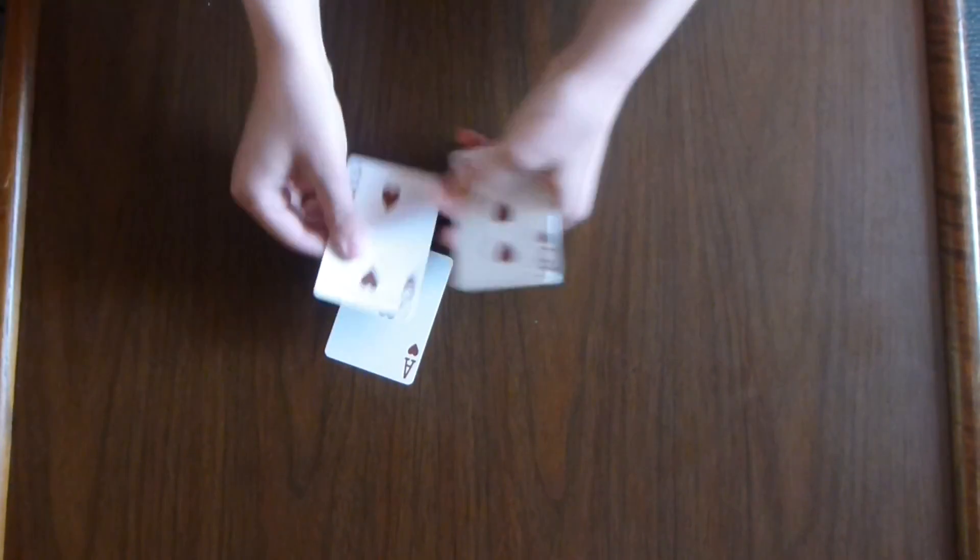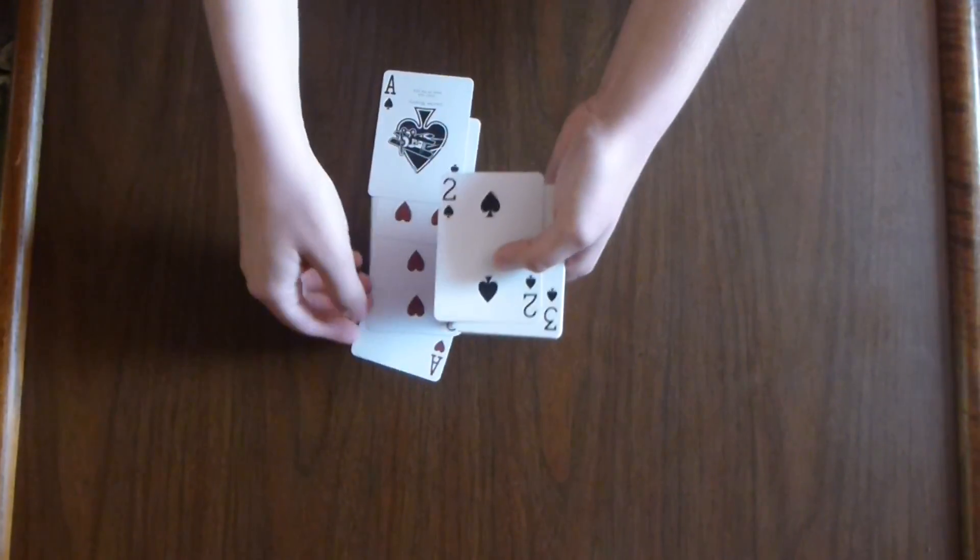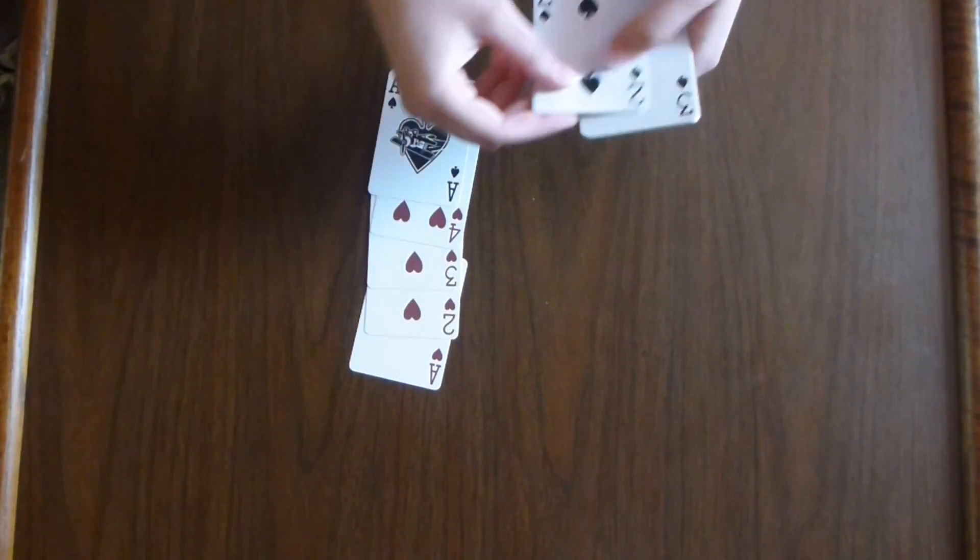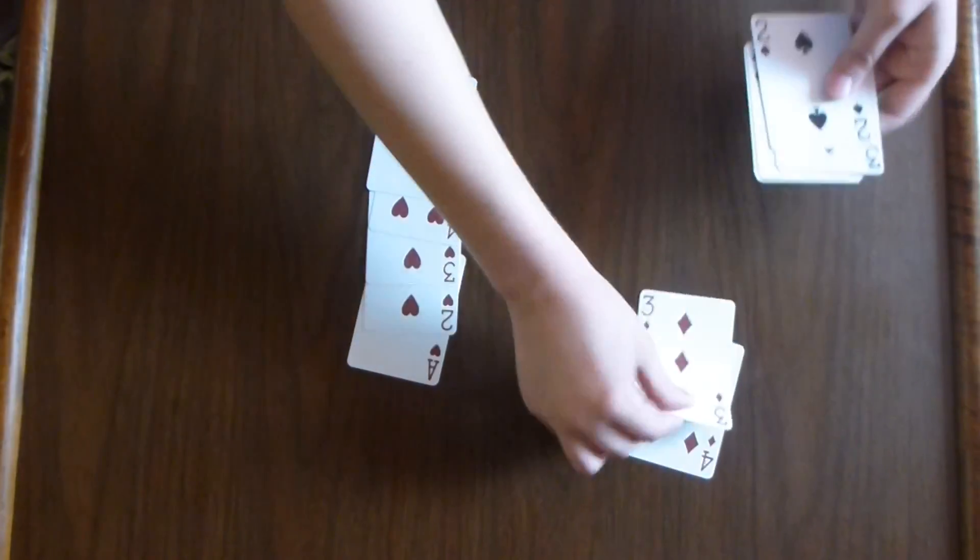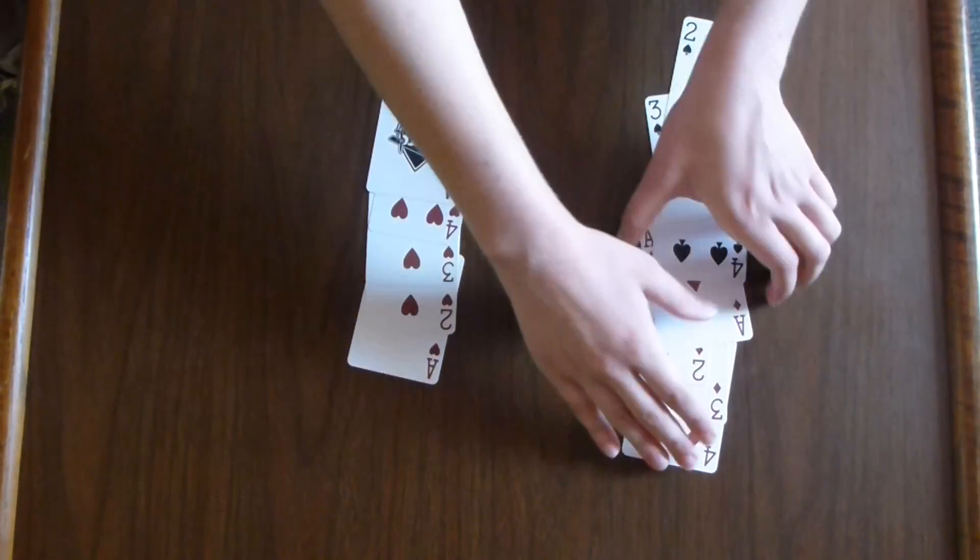Now I'm going to simulate dealing the cards face-down and the audience participant telling me when to stop. Let's just say I stop here. Now, as you can see, we have two piles of cards, but the order between them has been reversed.